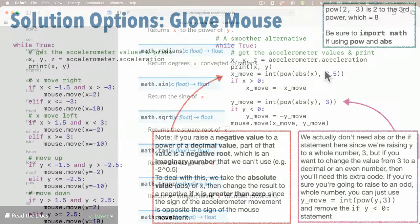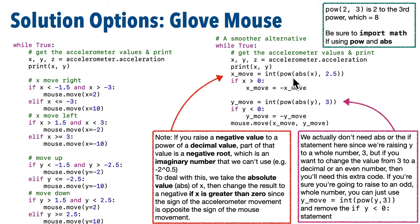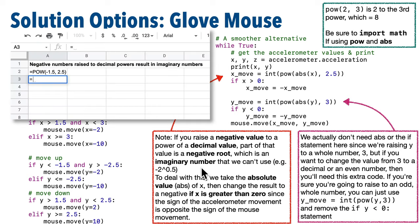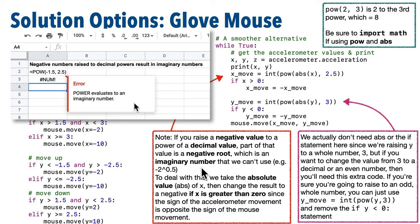By raising the accelerometer X or Y coordinates to a power, we can scale how much we want to move the mouse coordinates, increasing more severely if we tilt more severely. But there's a problem — sometimes our accelerometer values are negative. Raising a negative value to a whole number is fine, but if you try to raise a negative value to a decimal, you're trying to take a partial root of a negative, which is an imaginary number. To demonstrate this in Google Sheets, =pow(-1.5, 2.5) gives an error: 'Power evaluates to an imaginary number.' We can't raise a negative value to a power with a decimal because that gives a number we can't use.